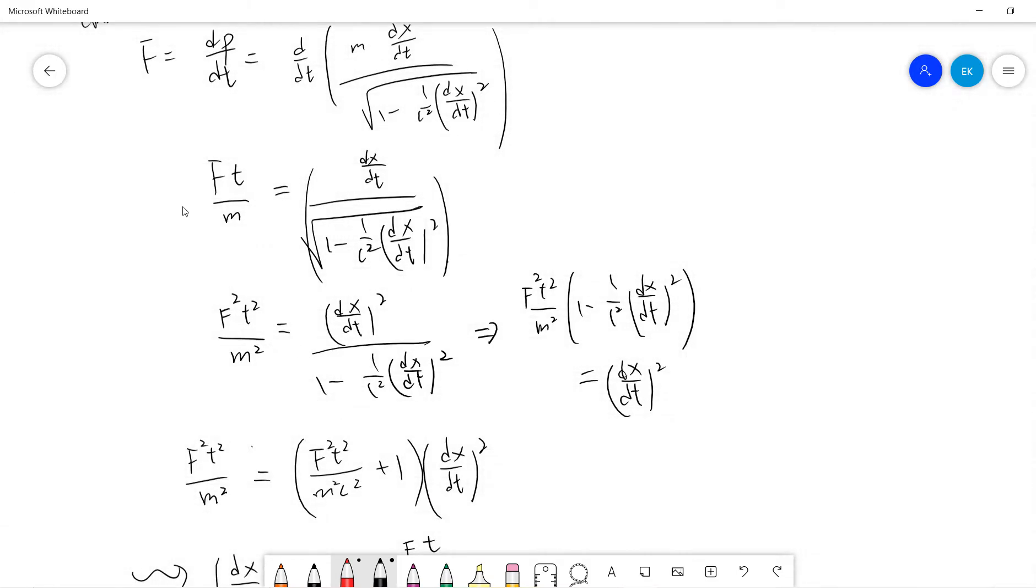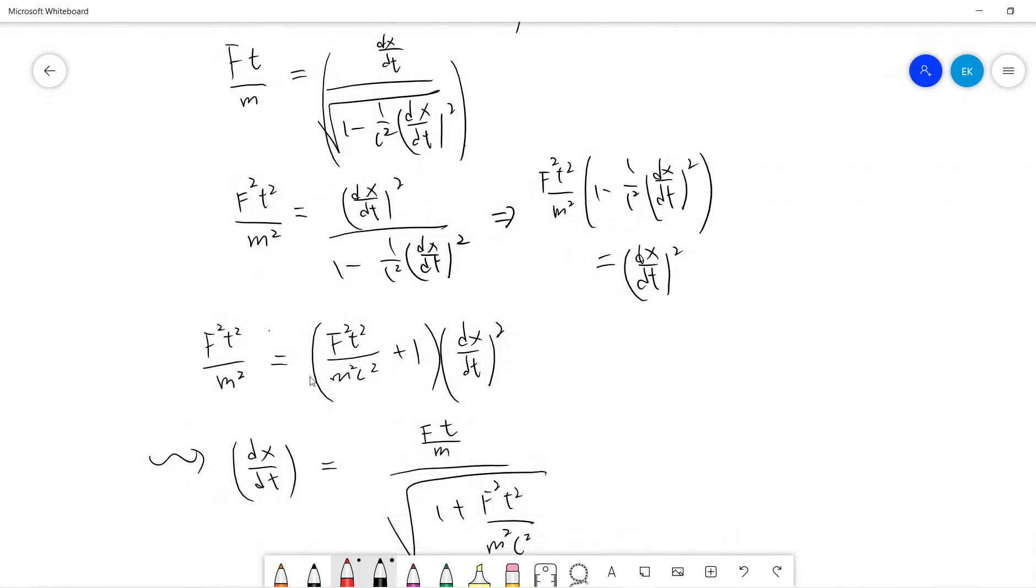And it's very easy that you just square both sides, and then you write it as this. So you get your speed term. So you get your (dx/dt)² becomes this. So your ft/m, you get this. After your computation, you get this.